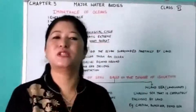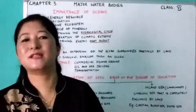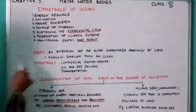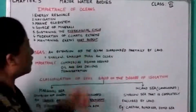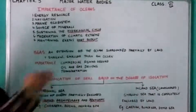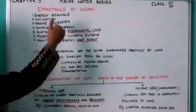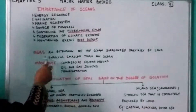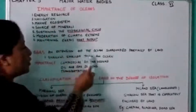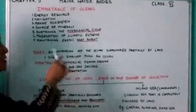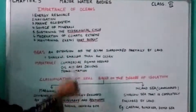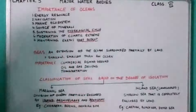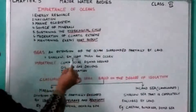The second important water body is the sea. The first largest is the ocean and the second is the sea. A sea is an extension of the ocean surrounded partially by land — it is the division or extended portion of the ocean which is partially, not completely, surrounded by land. It is shallower and smaller in size than an ocean. 'Shallow' means not very deep.